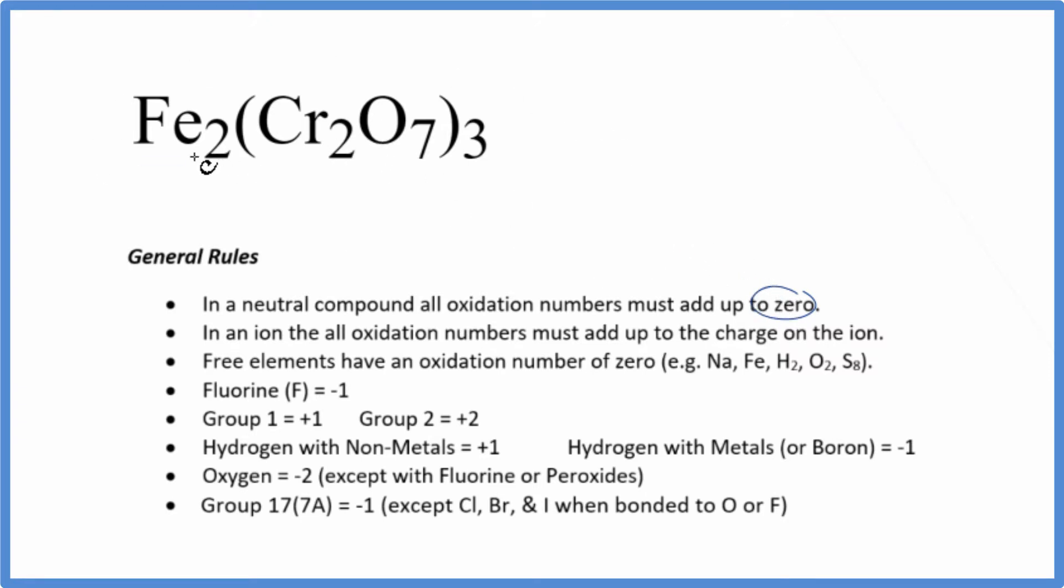The problem we have here is iron is a transition metal, and chromium is also a transition metal. So we have to look at what they're bonded to to figure out their oxidation numbers.